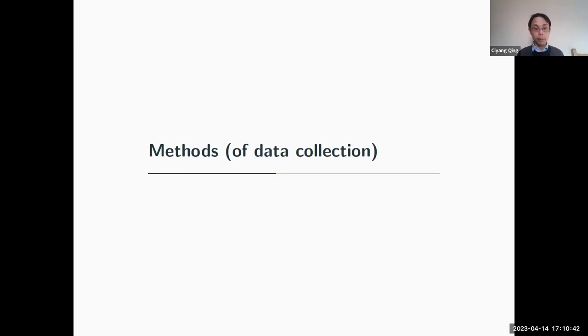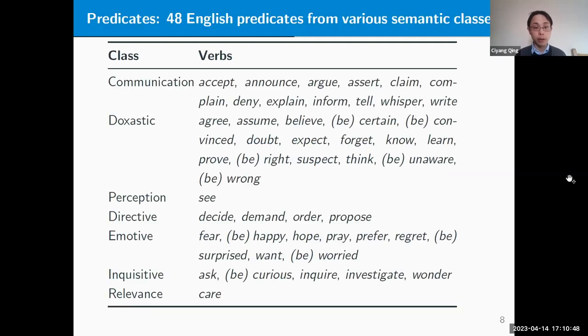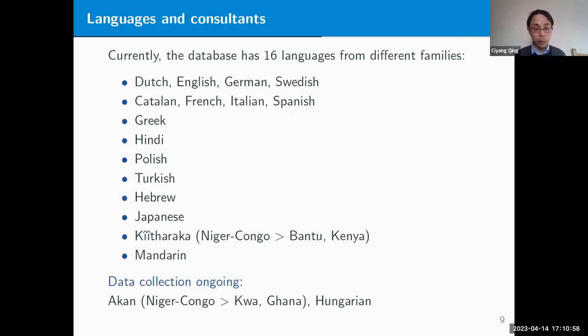About the methods of data collection: we started with 48 English predicates, and these predicates were chosen from various semantic classes as follows. We recruited native speakers of 16 languages from different families, one speaker per language, and then also two additional languages where the data collection is ongoing.